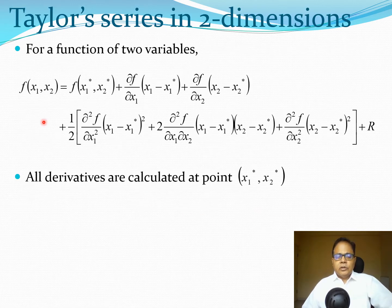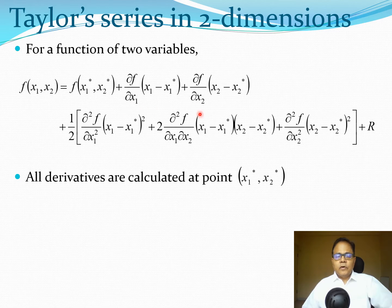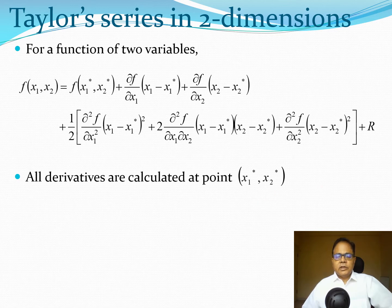If we expand this to two variables, the Taylor series becomes: the first term is the function value at (x₁*, x₂*), then two first-derivative terms, then three second-derivative terms. All derivatives and function values are calculated at (x₁*, x₂*), and the Taylor series will change if these points change.